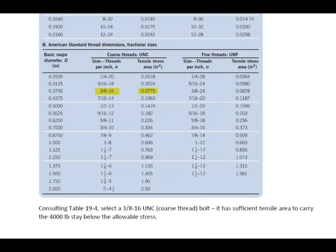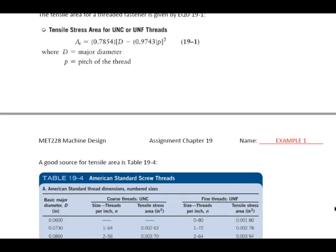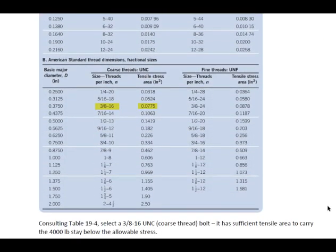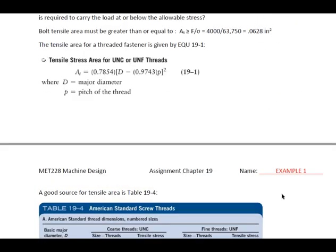We had 0.0628 as our minimum area. So let's go to this chart and pick out a thread that gives us an area bigger than 0.0628. When we're consulting this table, what we're going to see is that if we pick a 3/8-16 coarse thread, UNC coarse thread, we get a tensile stress area of 0.0775, which is greater than our 0.0628, which is our minimum area right here.